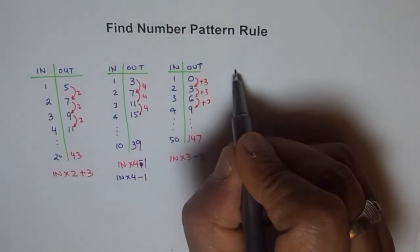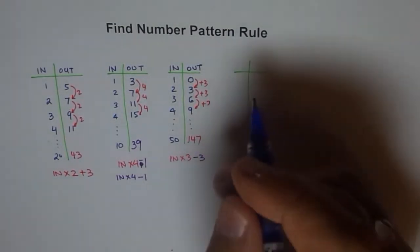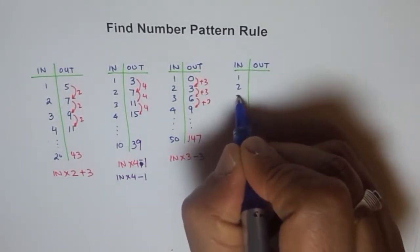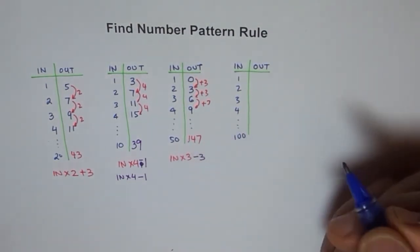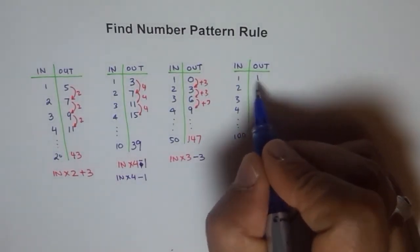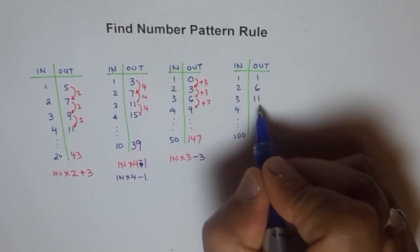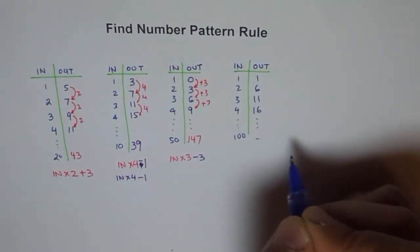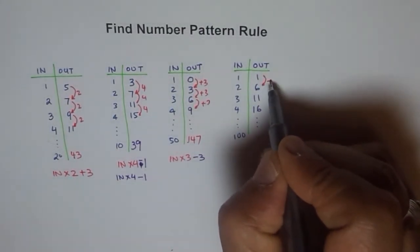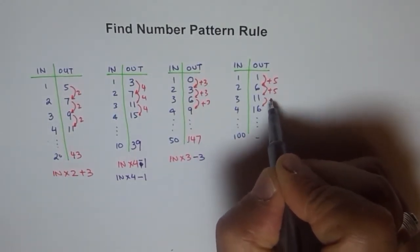Let's do one more — this is a fun exercise! Input 1, 2, 3, 4, and let's go to 100. We start with output 1 and add 5 each time: 1, 6, 11, 16, and so on. How did we get our pattern? We added 5 each time.